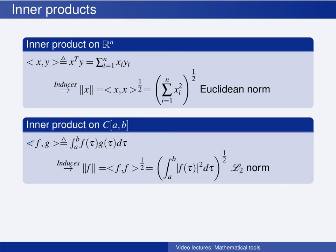The inner product between two continuous real-valued functions f and g is defined as the integral from a to b, which is the interval on which the functions are defined, of the two functions multiplied together. Using the definition of the induced norm and inserting the definition of the inner product, we see that the induced norm is the L2 norm.